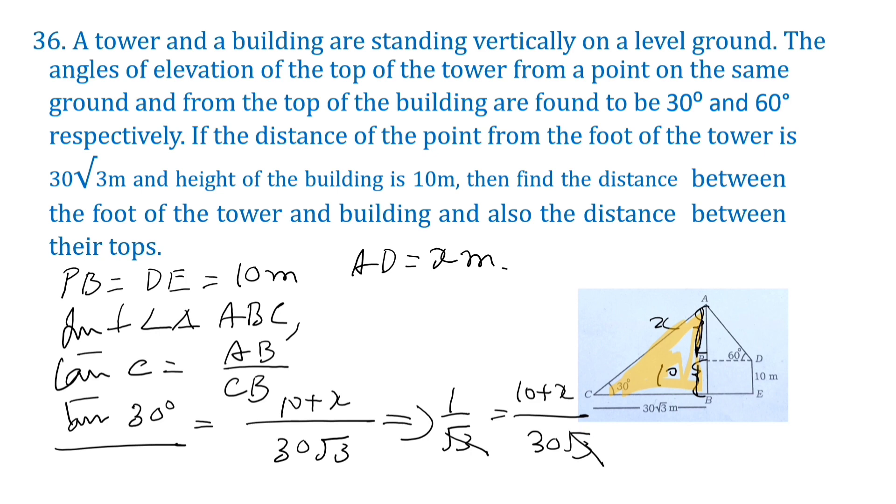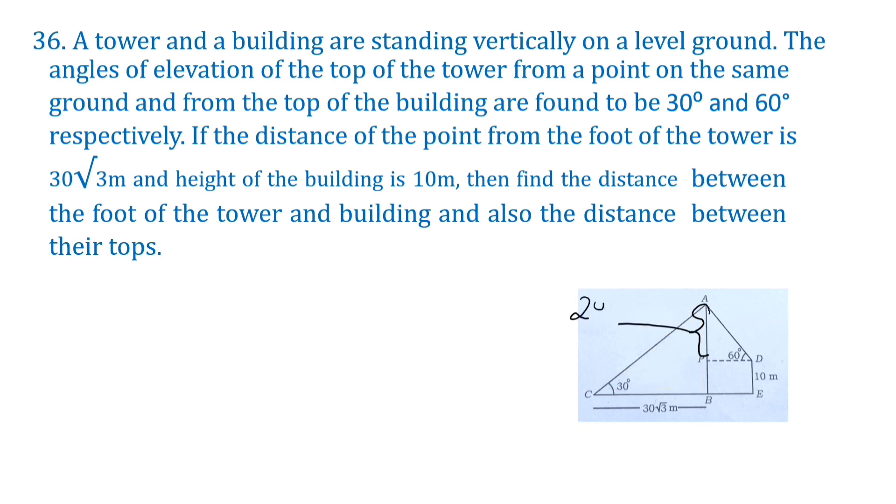Here we can cancel root 3 and root 3. Both are in denominator. So 10 plus X is equal to 30. It implies that X is equal to 20 meters. This one is 20 meters. AP is 20 meters. This is 10 meters.